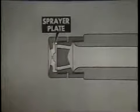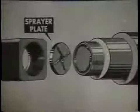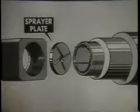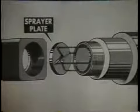Now let's see the action of the sprayer plate in more detail in an exploded view. You can see how the oil passages in the atomizer nozzle guide the oil into the slots of the sprayer plate, how the slots give the oil a very rapid whirling motion in the whirling chamber, and how the whirling oil emerges from the sprayer plate orifice or opening as a hollow cone of mist-like oil particles.